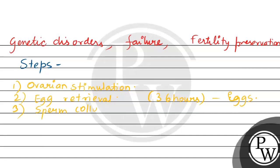The third step is sperm collection. A sperm sample from the male partner is washed and prepared in the lab so that the most motile sperm are selected. The retrieved eggs are placed in a culture dish and mixed with the prepared sperm to allow natural fertilization. If needed, intracytoplasmic sperm injection, or ICSI, is used — where a single sperm is injected directly into the egg to facilitate fertilization.